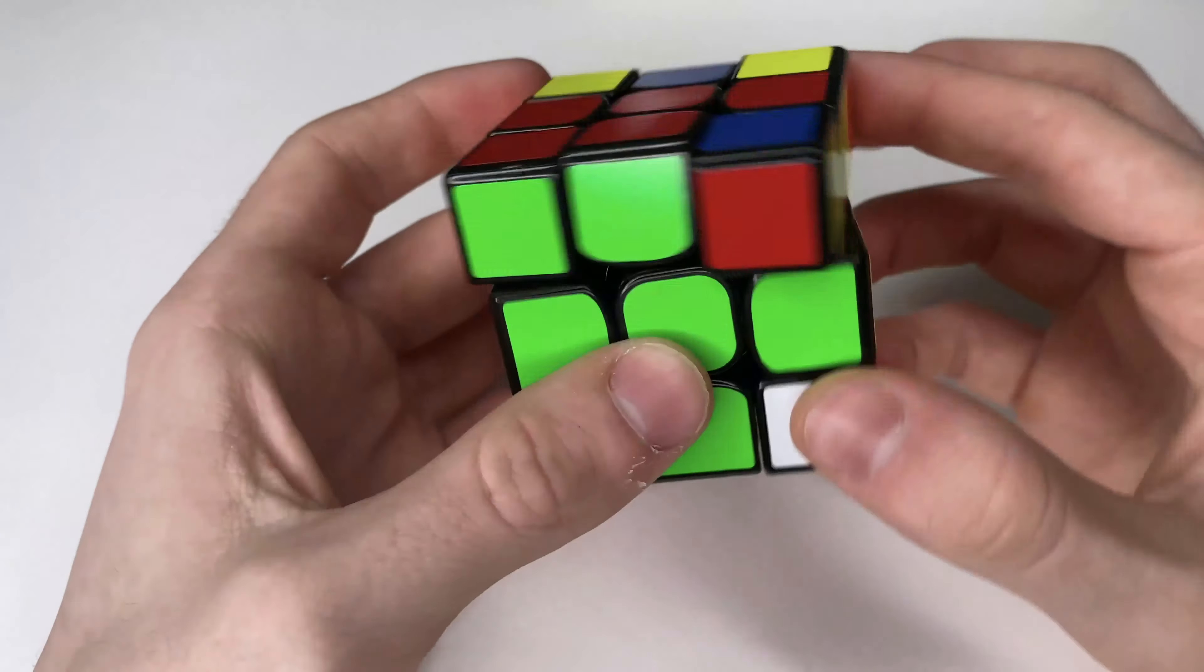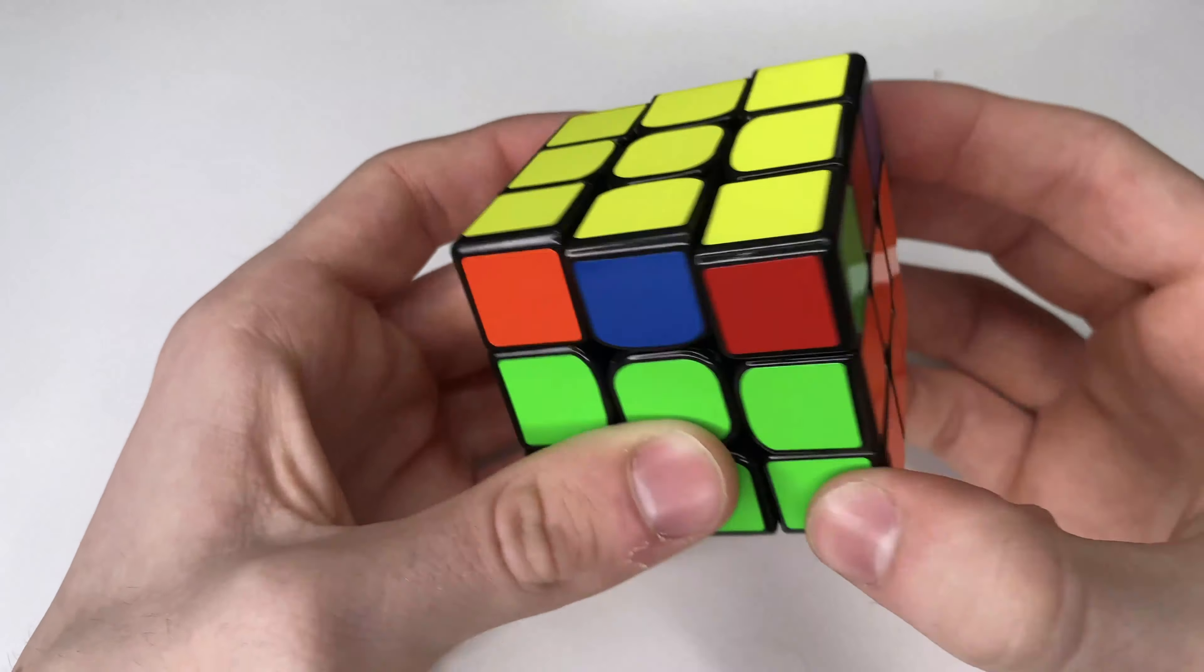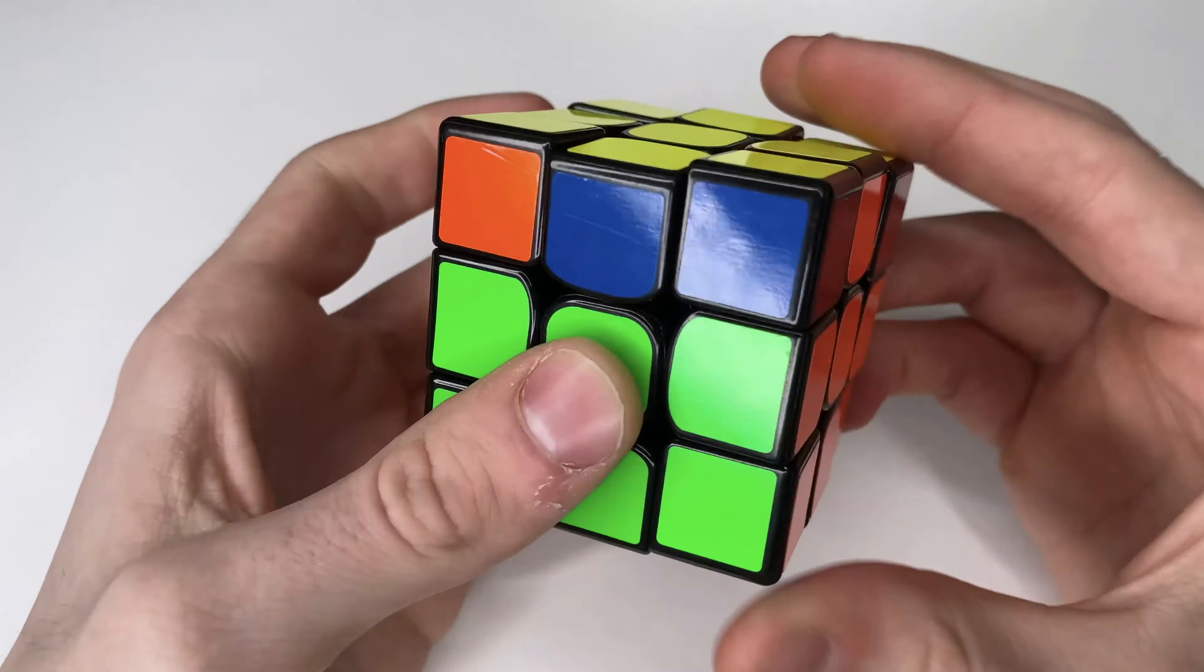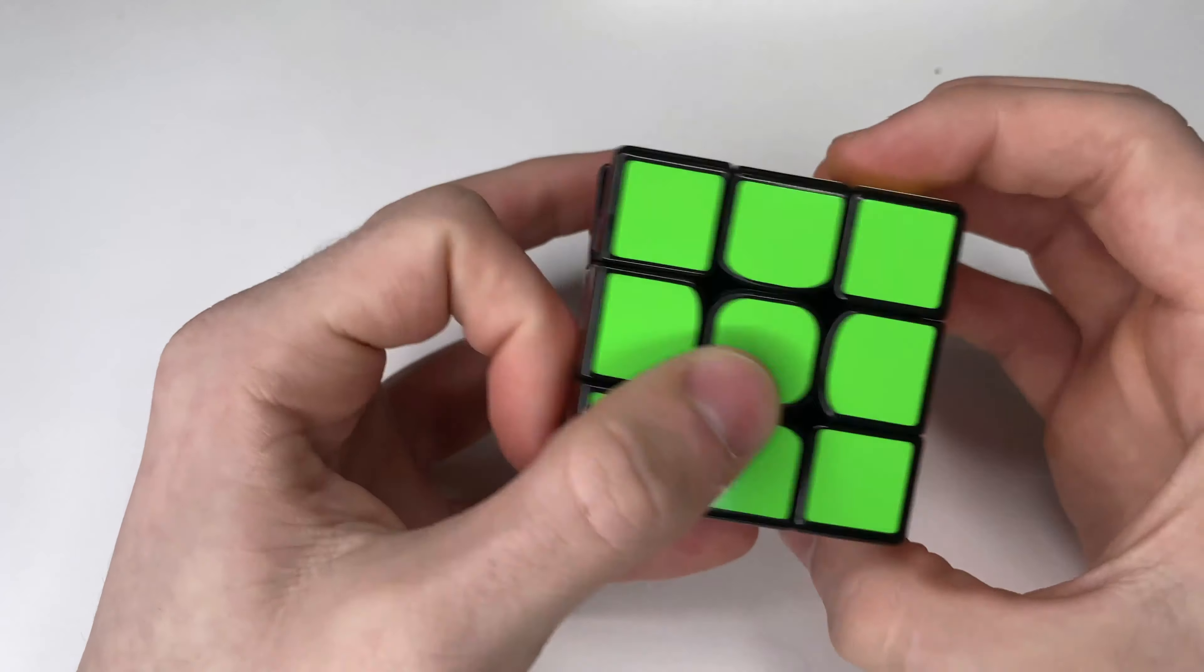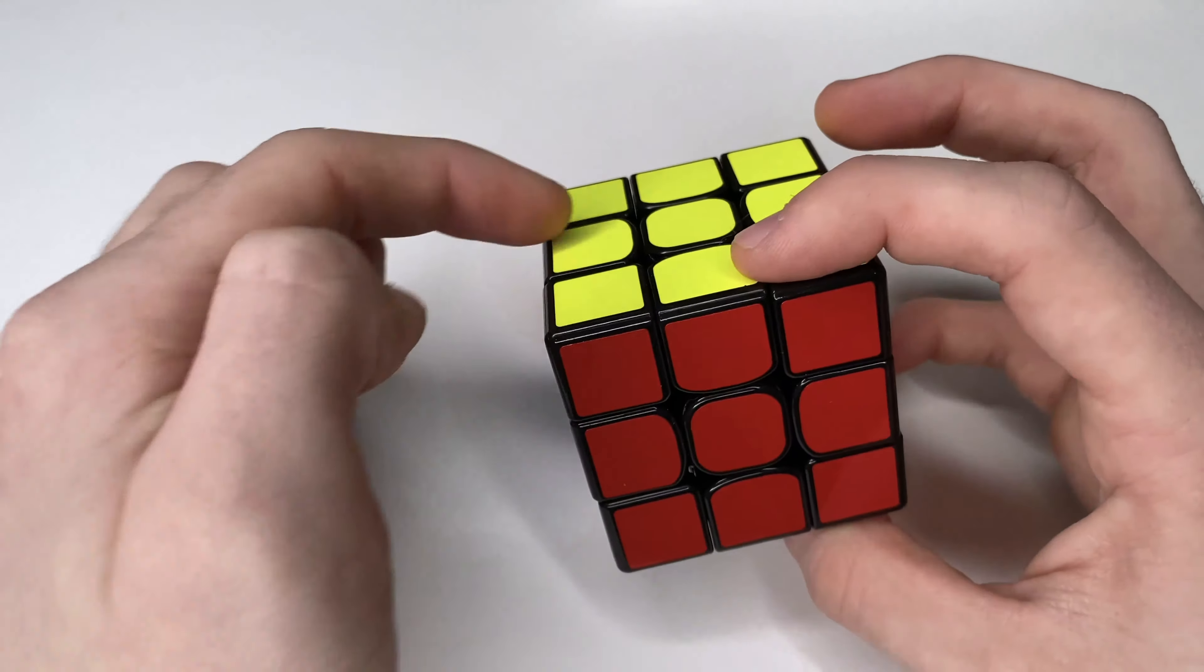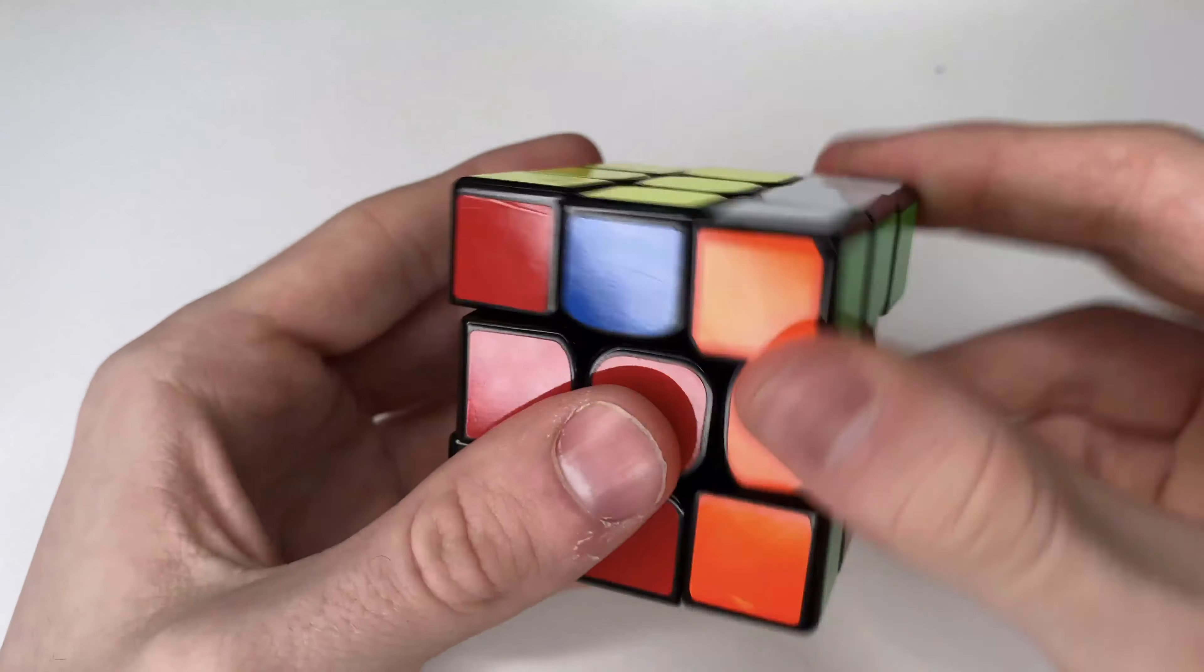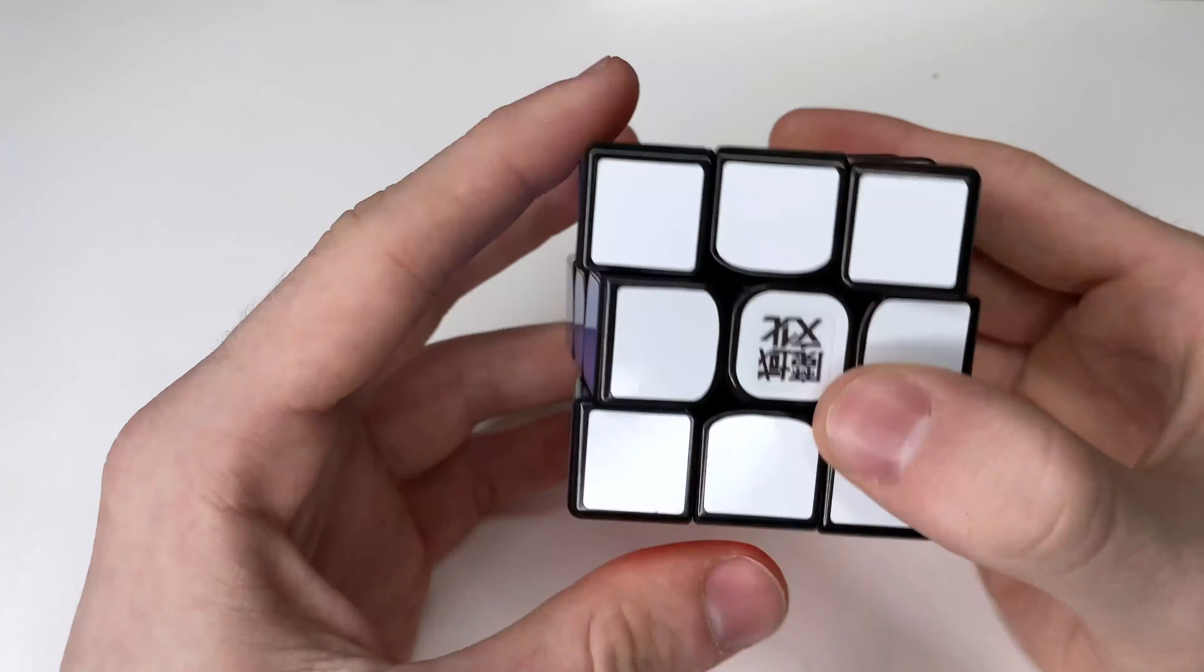And then I got two-look OLL here. And then I have two-look PLL. I have a lot of my PLL, but this one I just don't know. So I solve the corners first. Sometimes if I can't get it, I'll solve the corners, and then I'll just do the middle pieces. I'll do these algorithms because I can get all the corners done, and then I can just do that, and I can still get sub-20 solves. So that definitely works.